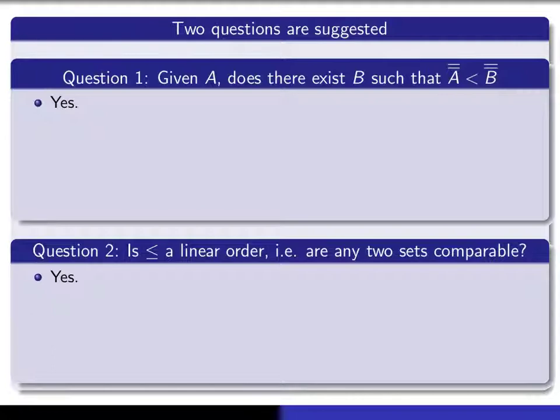And the second question is, is less than or equal to a linear order? In other words, given any two sets A and B, is it necessarily true that either there's an injection from A to B, or an injection from B to A? That's by no means obvious one way or the other. But as I've indicated here, the answer to both of these questions is yes.